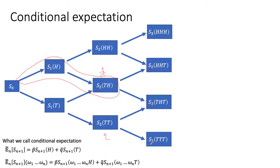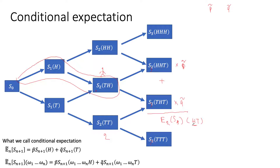We know the risk-neutral probabilities that we introduced earlier — P tilde and Q tilde. What we need to do is take the probability of going up, which is P tilde, times the stock price in the up scenario, plus the stock price in the down scenario times the probability of going down Q tilde. When we sum this up, we get the expected value of the stock price at time period 3, based on the first two coin tosses being head and then tail.